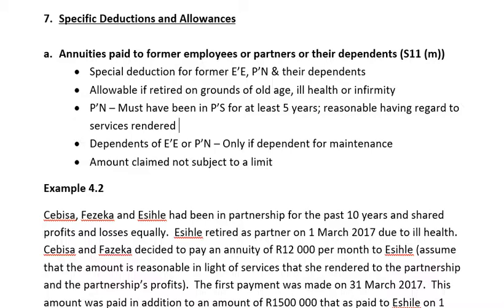There is also a special deduction in terms of Section 11M for dependents of employees, former employees, or former partners — but only if the dependents depend on this annuity for maintenance. You need to check whether these dependents of former employees or partners depend on this annuity for maintenance. If so, the full amount may be deducted as an allowable deduction. There is no limit to the amount claimed.